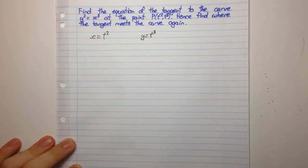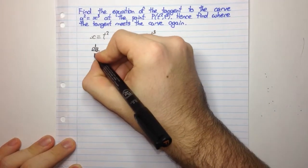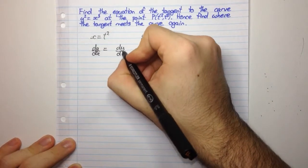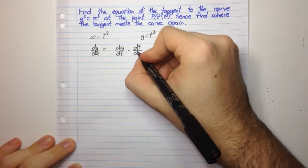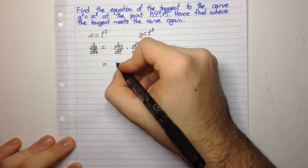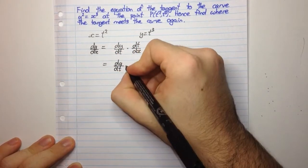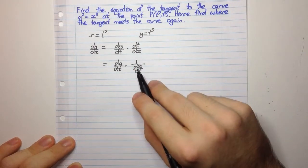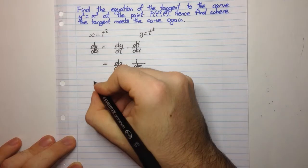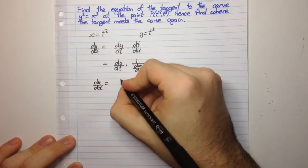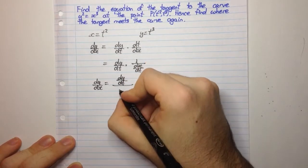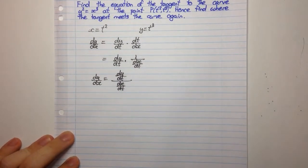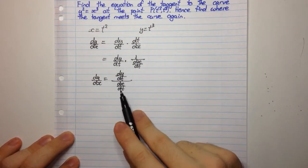We want dy/dx, which is the gradient of the tangent. We can get dy/dx by dy/dt times dt/dx, which equals dy/dt multiplied by 1 over dx/dt. So dy/dx equals dy/dt divided by dx/dt. This is a method you can use in general when you have parametric equations and want to find a derivative.